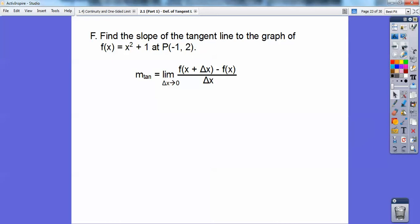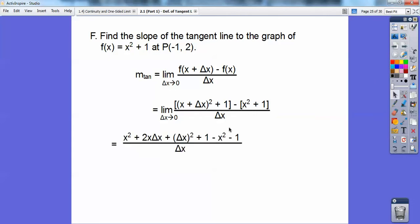Here we go. I'm substituting that in. Here's my (x + Δx)² + 1, so I just substituted in, then minus my plain old f(x), which is that. I'm going to foil this out: (x + Δx)(x + Δx). I get that quantity, and I distributed this negative through. I just foiled out (x + Δx)(x + Δx).